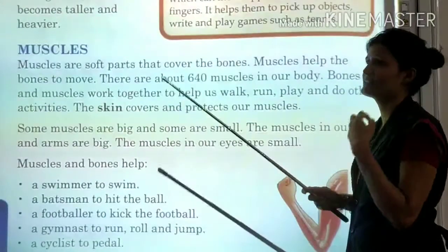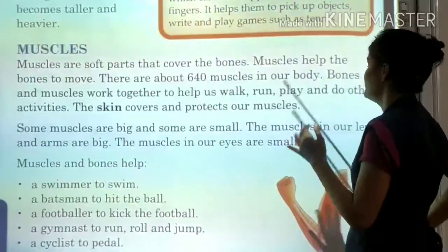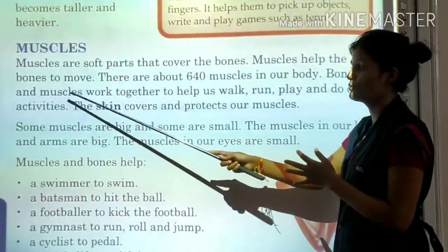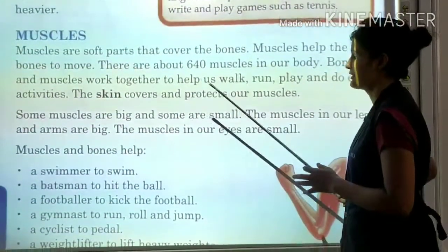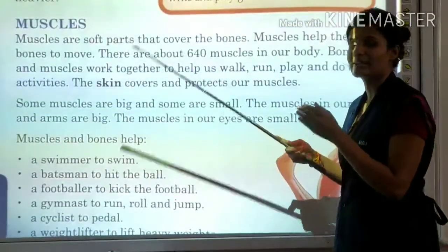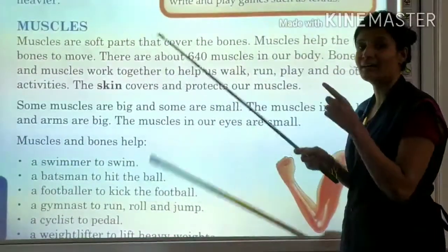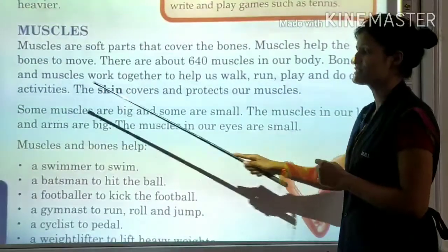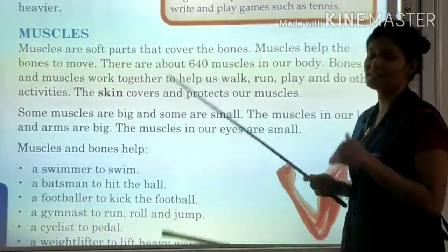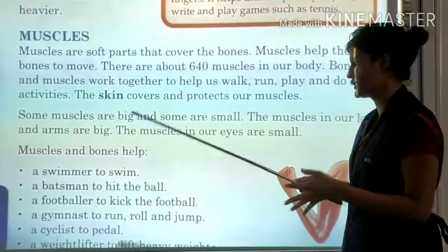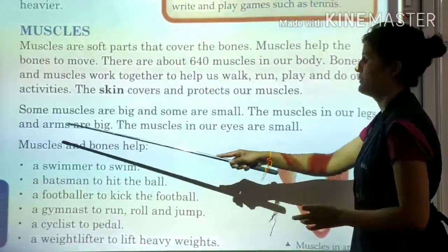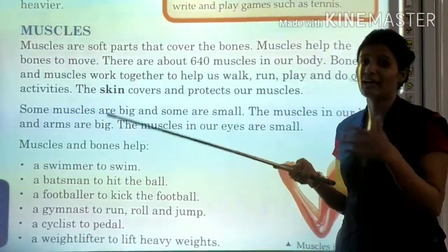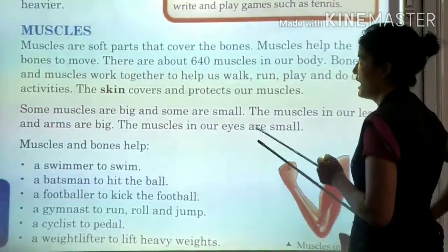There are about 640 muscles in the body. We can do many activities like ride, eat, and dance with the help of bones and muscles. The skin covers and protects our muscles, while muscles protect our bones. Some muscles are big and some are small. The muscles in our legs and arms are big, but the muscles in our eyes are small.